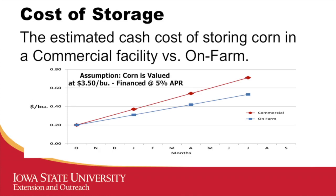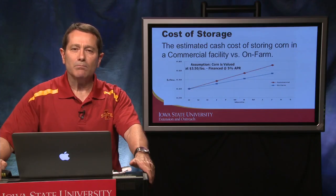Cost of storage: the estimated cash cost of storing corn in a commercial facility versus on-farm. Let's use corn with a value of $3.50 per bushel cash price, but interest accruing — whether the interest be on the on-farm storage facility or on money that you've borrowed against corn that's being stored. An initial $0.20 per bushel lift charge for handling those bushels. Note either the blue line, the on-farm storage cost, or the red line, the commercial storage cost.